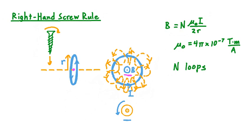So we can say that B points out of the screen at our particular point of interest, the very center of this circular loop of current. Applying the right-hand screw rule means taking such a screw, orienting it so that we rotate it in the direction of current I, and then the direction the screw would travel as it's driven into a surface indicates the way the magnetic field B points.